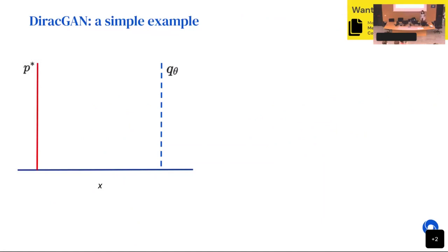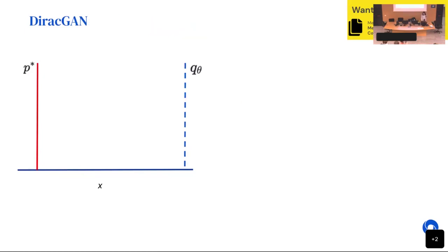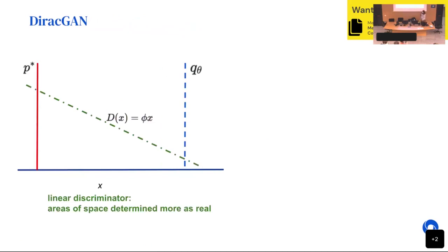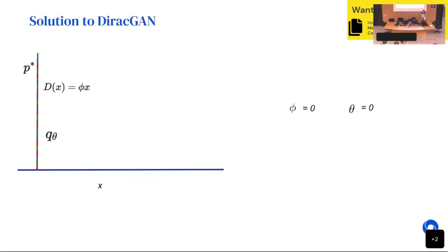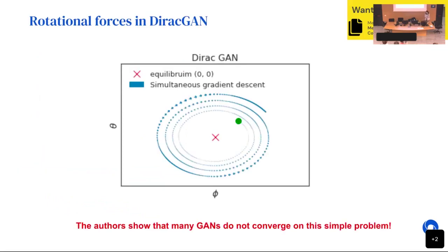Here's a very simple example from a great paper showing why GAN optimization can be hard. You only have a Dirac delta at zero as the data distribution, and the model is also a Dirac delta at theta. The only thing the generator can do is move theta around. We have a linear discriminator. We know the solution: theta equals zero and phi equals zero. What the paper showed nicely is that many GANs do not converge on this simple problem, which led them to introduce regularization.